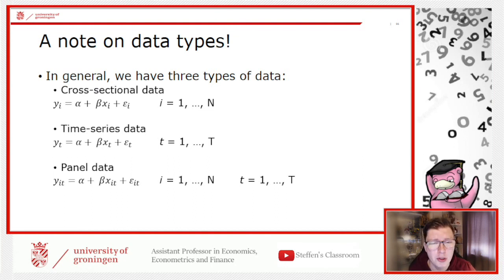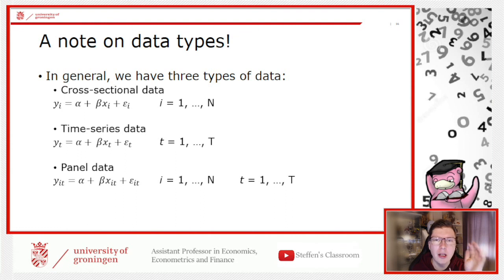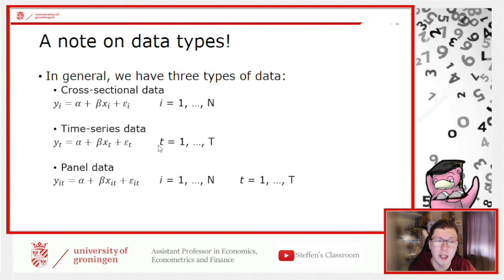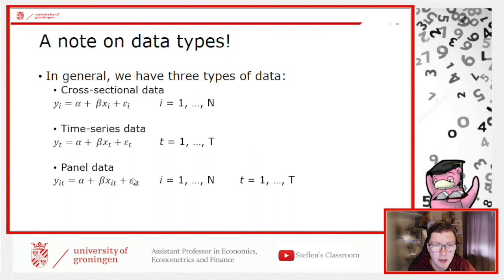Third, we can combine those two to get panel data, also known as longitudinal data. Here you have multiple entities at multiple points in time — surveying all students every week. The typical subscripts are i for the cross-section from 1 to N, lowercase t for the time series from 1 to T, and for panel data variables are written with both subscripts, such as Y-subscript-it and epsilon-it.